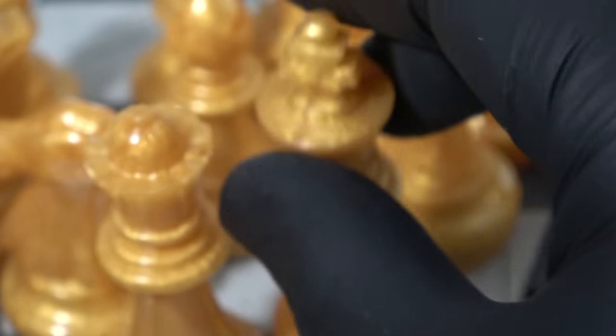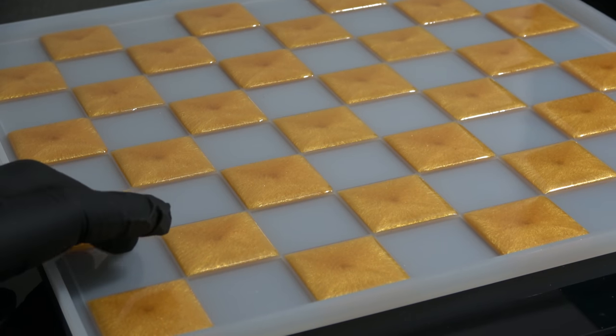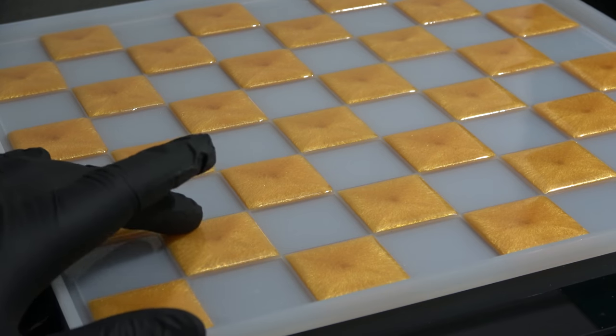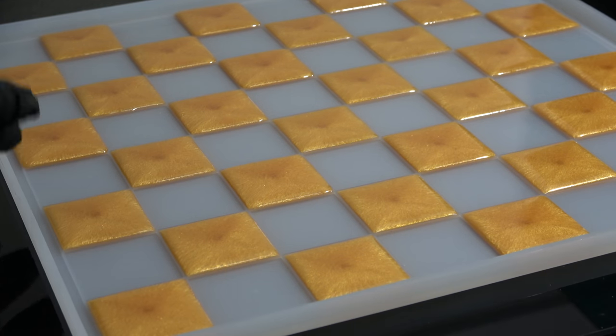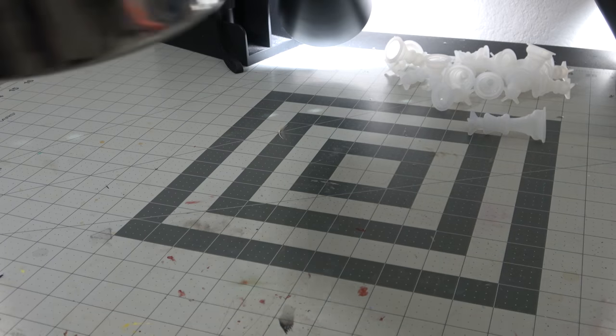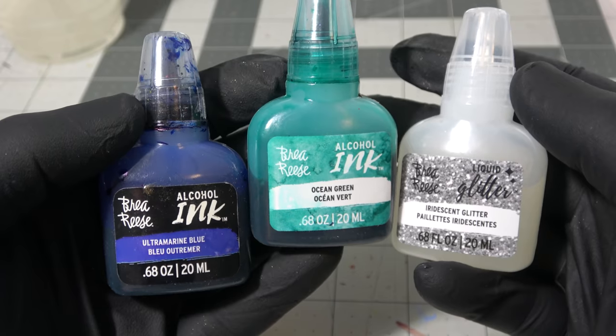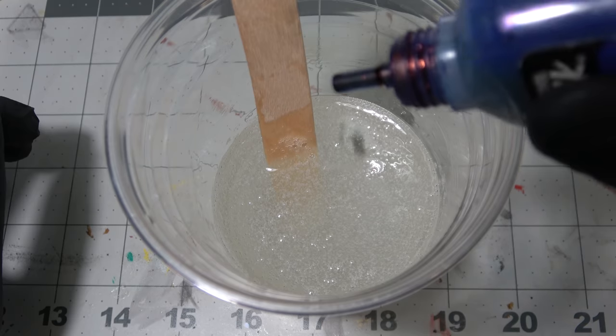The resin had cured on the board as well, and so now I can pour the second color on top of it without worrying about the two colors leaking. This second color I'm going to cover the entirety of the board with, just having a few gold squares. I'm going to end up using a tool that we haven't used in a long time, my vacuum chamber, but we'll get back to that in a minute.